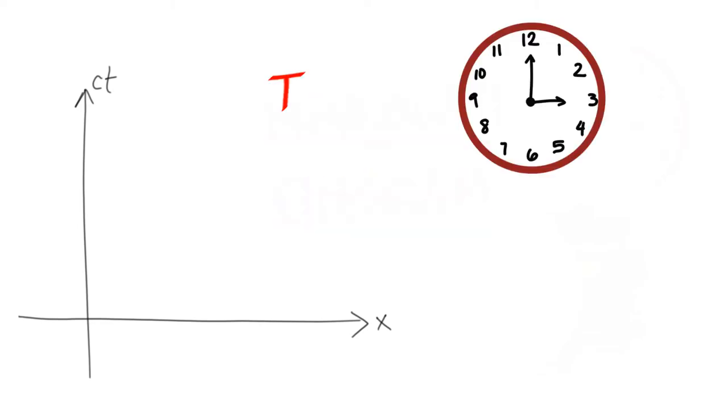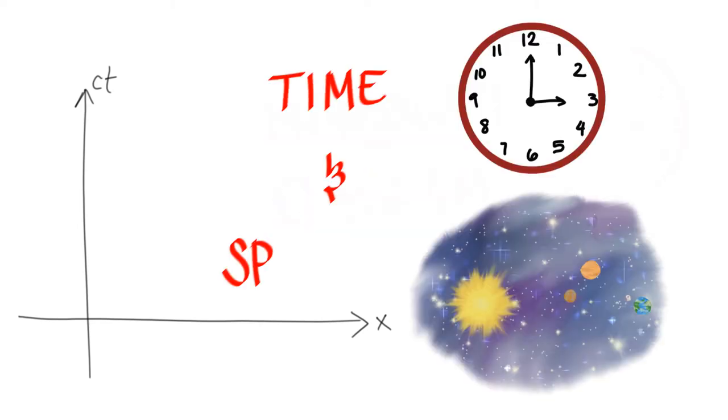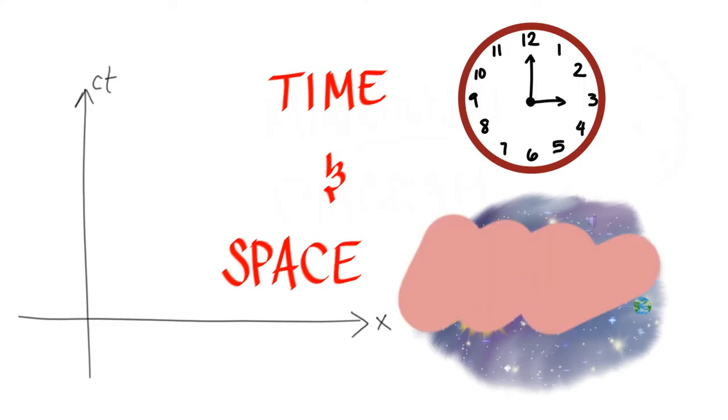This is a Minkowski diagram. Minkowski diagrams are graphical representations of space and time, where the x-axis represents space or an object's position and the y-axis is time.